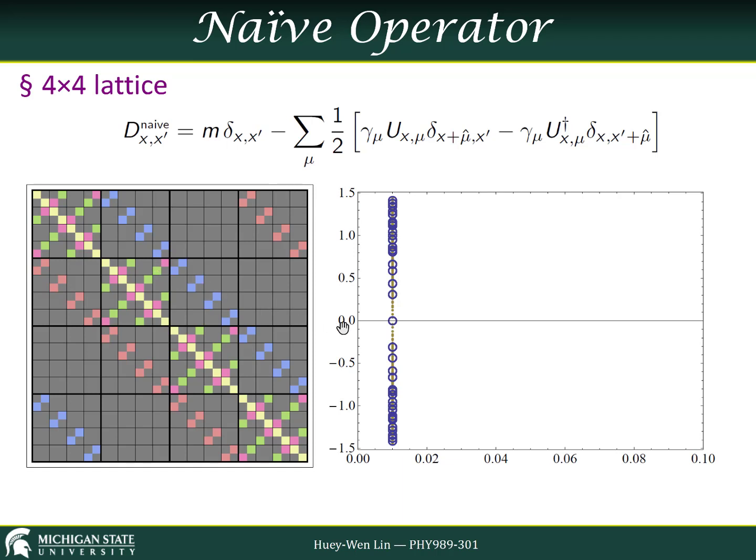If we use an eigensolver to look at the spectrum of this operator, what we find is shown in the right panel here. This is simply the complex plane. The horizontal axis is real, the vertical axis is imaginary. In this case, we've set the mass term to be equal to 0.01. And so we can see we have an eigenvalue with a value of exactly 0.01 along the real axis. Then we have a bunch of other eigenvalues that are also at the real point 0.01, but have larger imaginary values going both up and down.